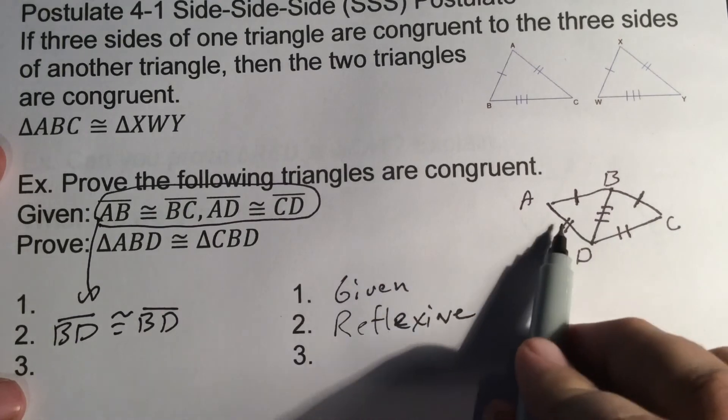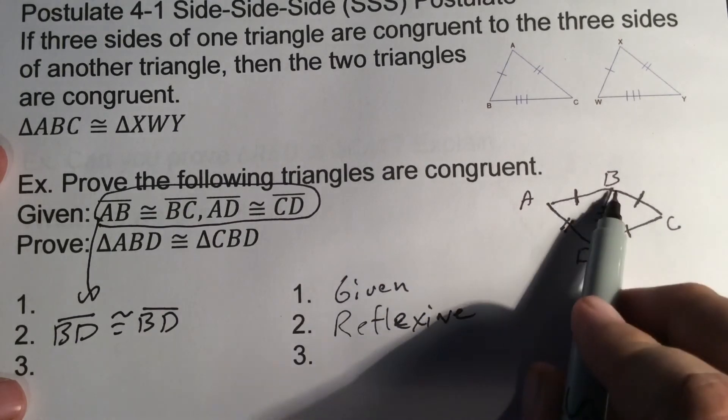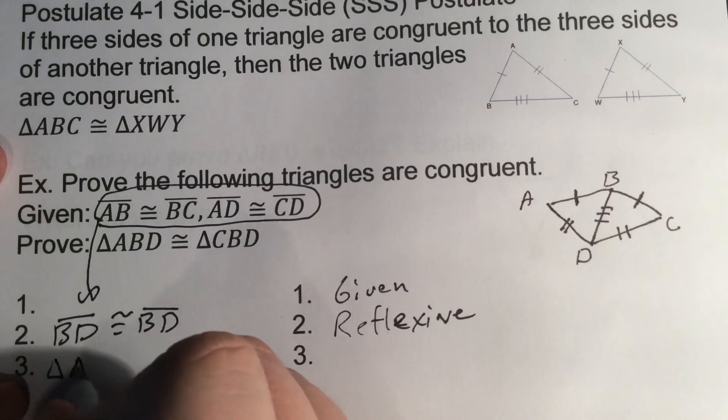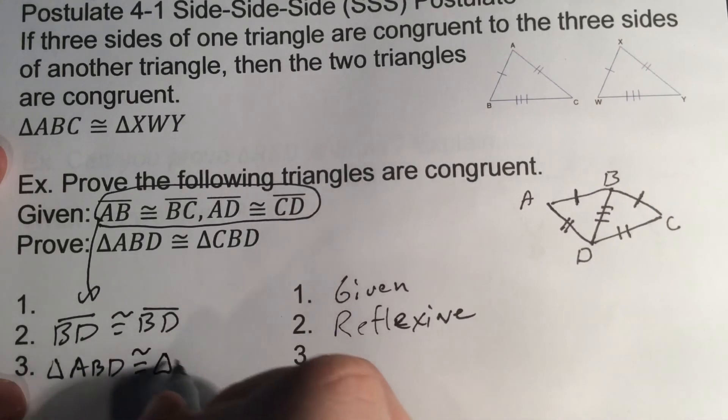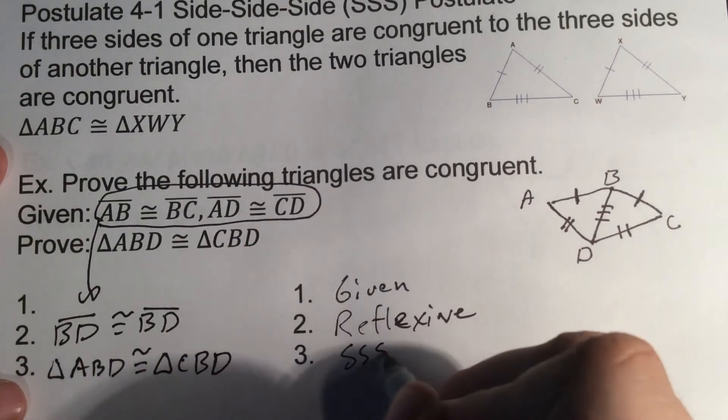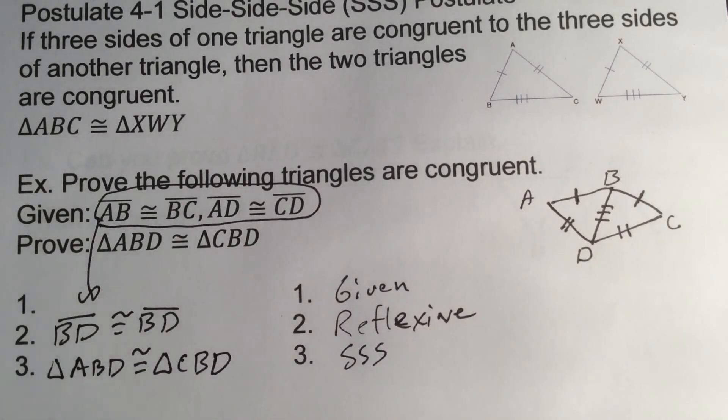Now we can go, wait, we have one, two, three sets of sides. So we can say our proof of triangle ABD is congruent to triangle CBD by side-side-side.